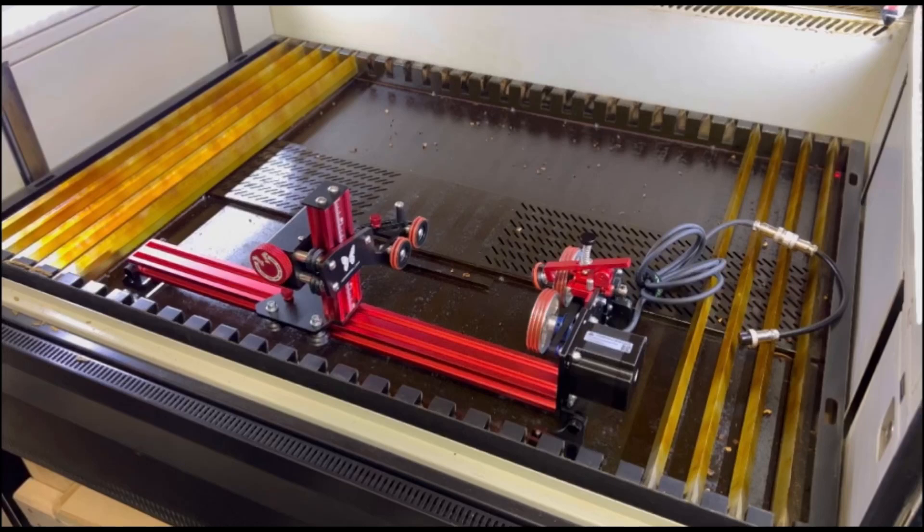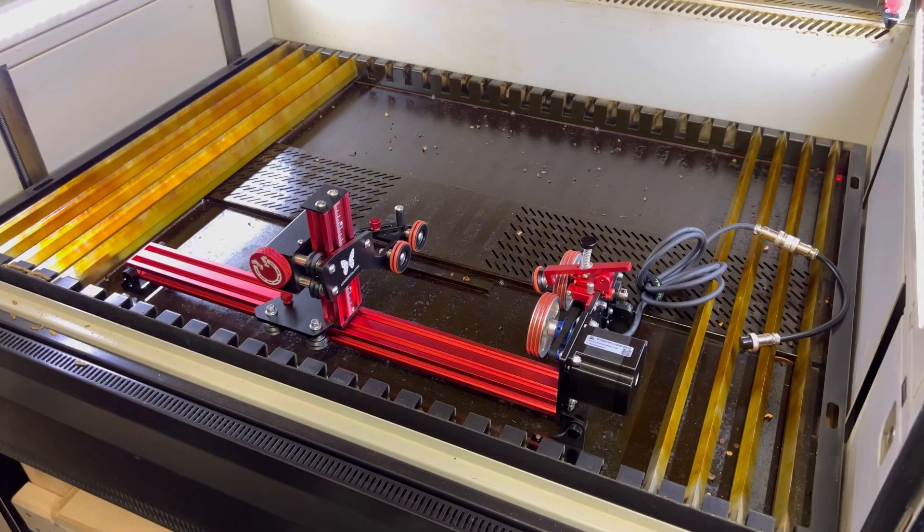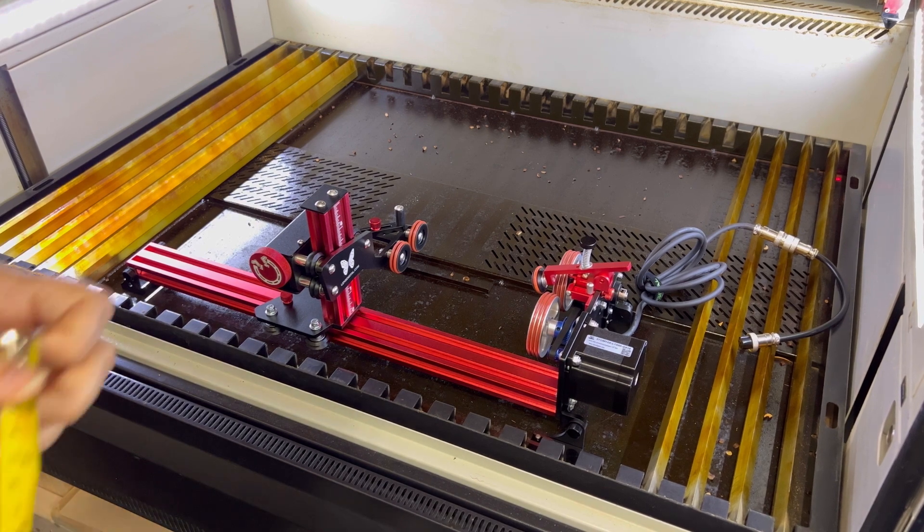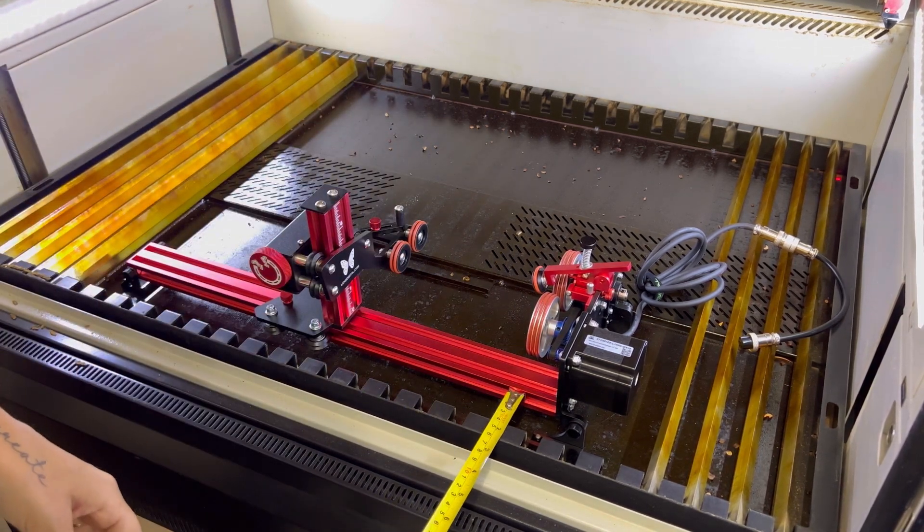In this video we are going to set up the Pyburn Rotary. Before I start, I lowered my bed all the way down, removed the honeycomb tray and some of the blades, and then put in my rotary.